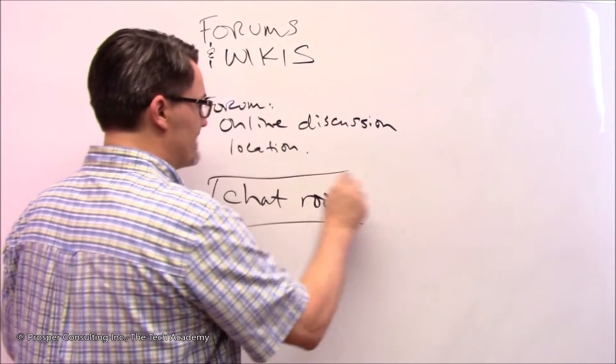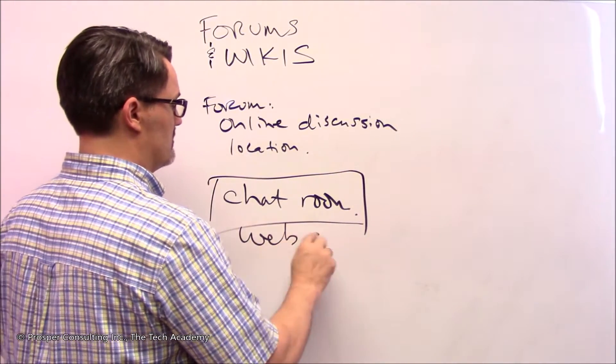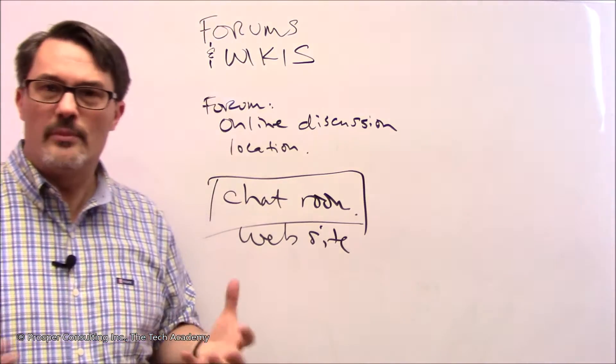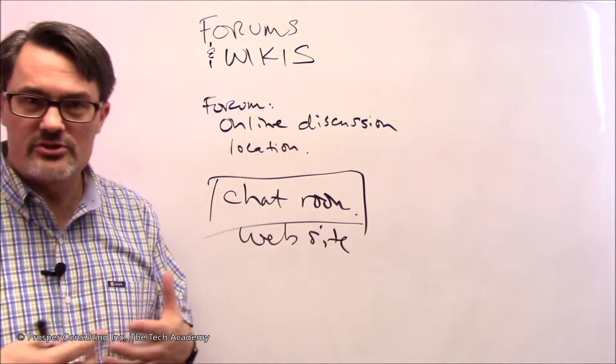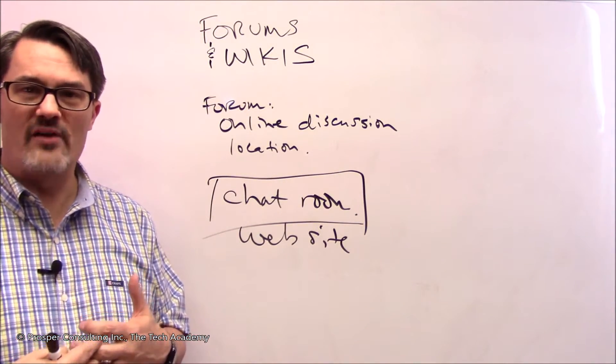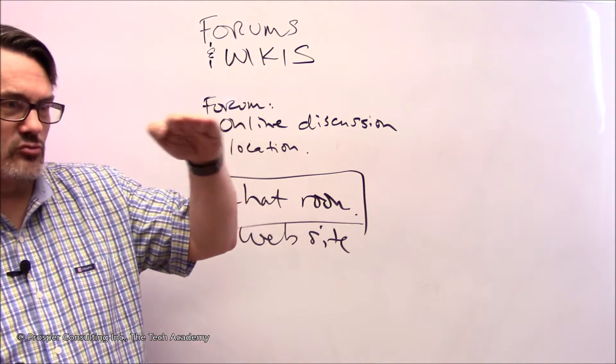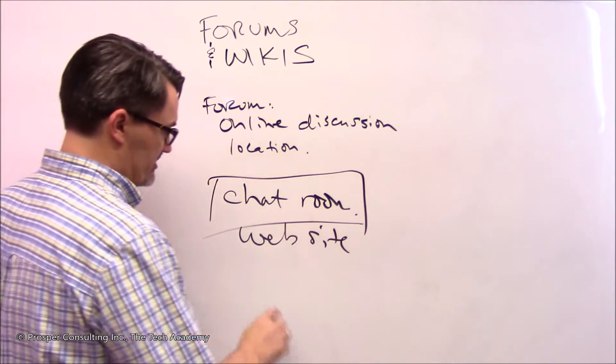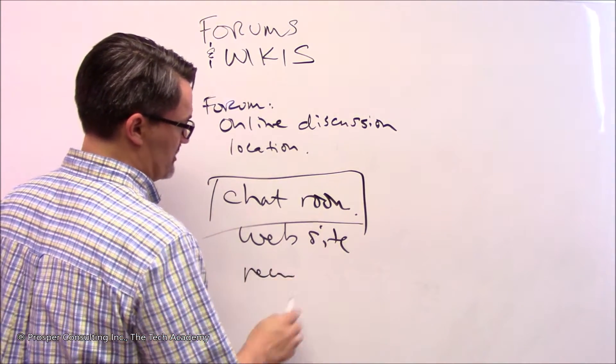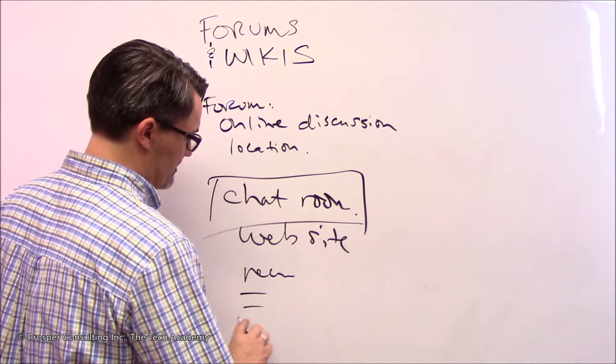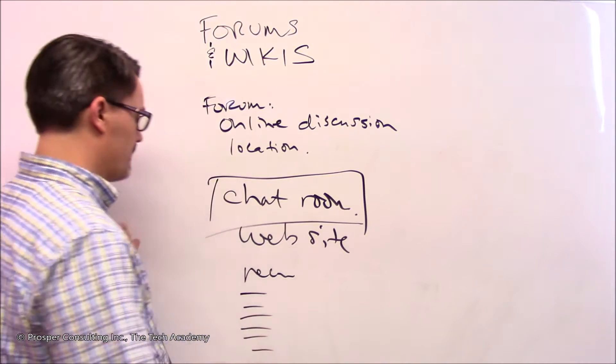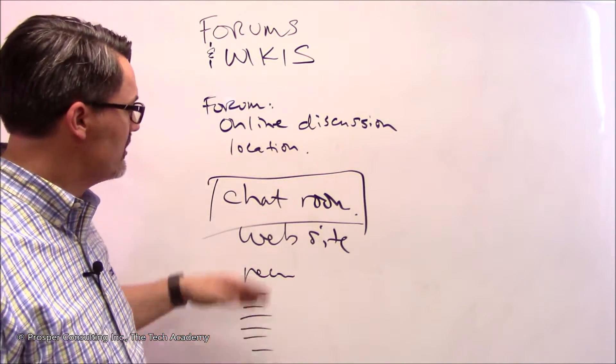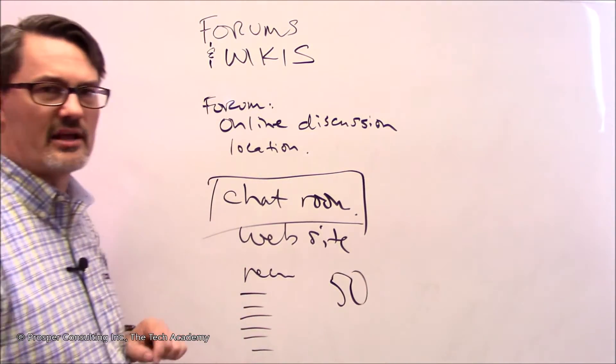A chat room is a form of a forum. It's an online discussion location, just a website that has a specialized function. And the function is to let users in, multiple users at once, and provide a way for them to see a real-time stream of written messages from each other. It could be like this: at the top would be the most recent message, and below that the most prior, and prior, and prior. That's just one way to arrange it.